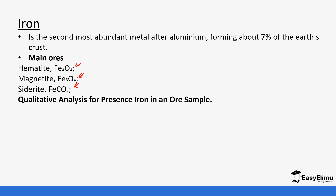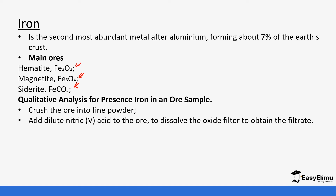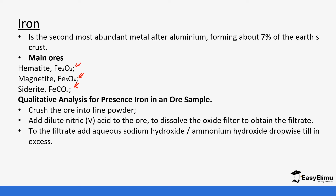How do we test for the presence of iron ions in an ore sample? In the same manner as we did with aluminium, we crush the ore into a fine powder and then add acid. The acid helps to dissolve the parts of the ore we want, and excess impurities that do not react with nitric acid are removed.